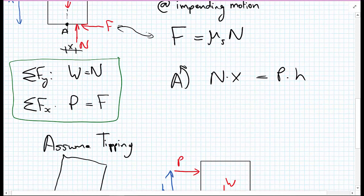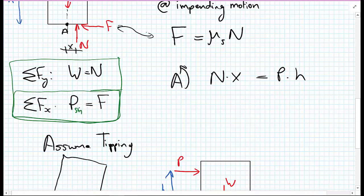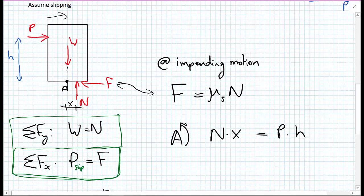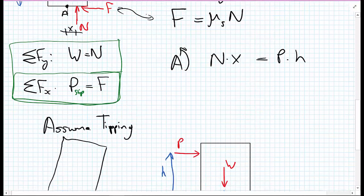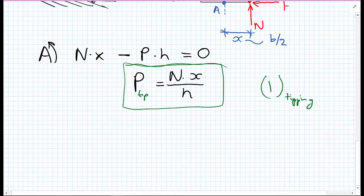Earlier on, we've evaluated a value of the P required for it to slip. And for a given situation, we can then work out a value for P_slip and a value for P_tip. Whichever one turns out to be the smallest will be the limiting case for this problem.